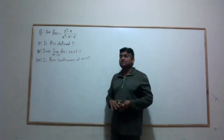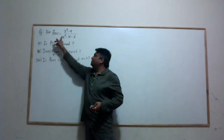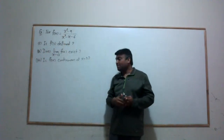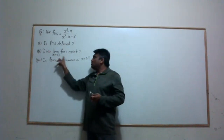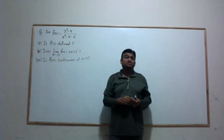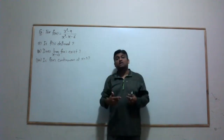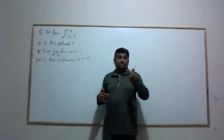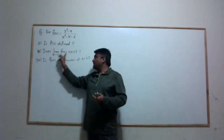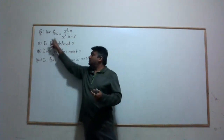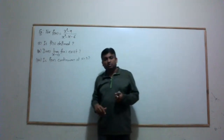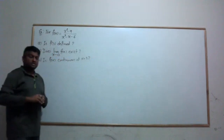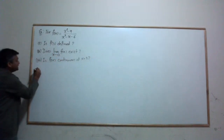The first question asks us to compute the exact value of the function at input 3, if defined. The second question asks you to predict where the function should go as x approaches 3 from either side. The third question asks whether this prediction matches the exact value of the function at that input — in other words, is the function continuous?